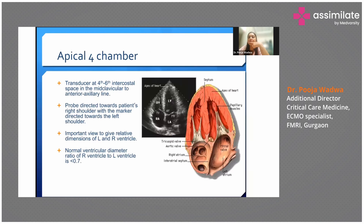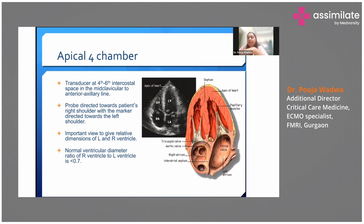The second view we use is the apical four chamber view. Here the transducer is kept at the fourth to sixth intercostal space in the mid-clavicular line to the anterior axillary line. The marker should be directed towards the right shoulder. It gives us an important relative dimension between the left ventricle and the right ventricle. The normal ventricular diameter ratio of right to left ventricle is less than 0.7.